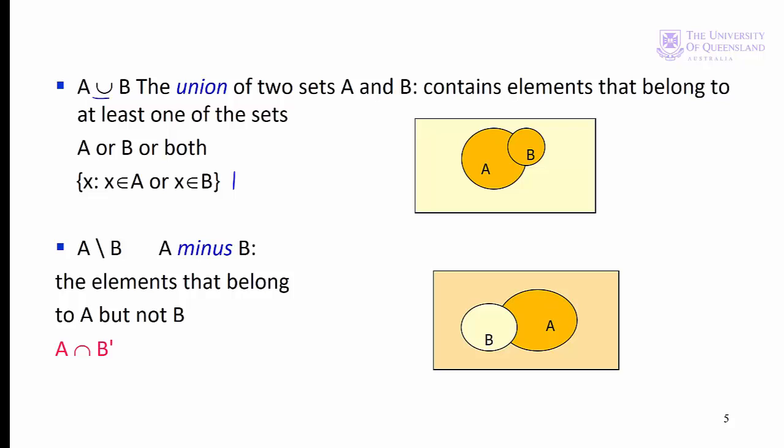We can also define a set such that the members belong to one set but not another. That's A minus B, or symbolically A backslash B. So A minus B is the orange area here — the elements that belong to A but not to B. We can also write that as A and not B, where B prime means not B.